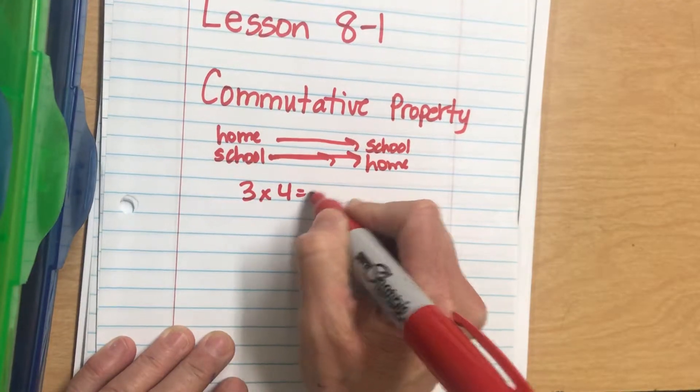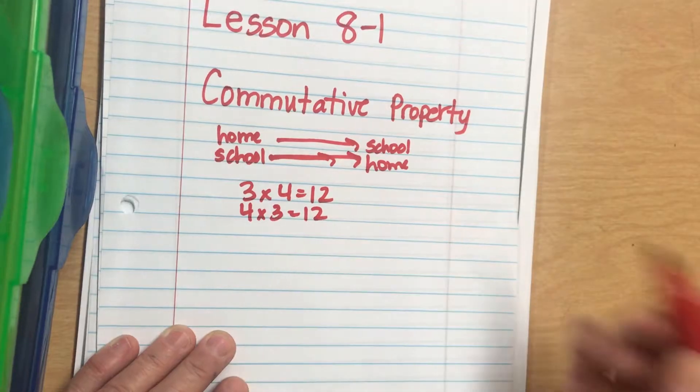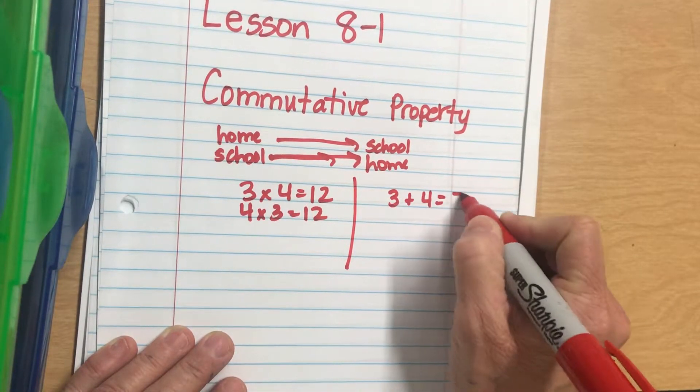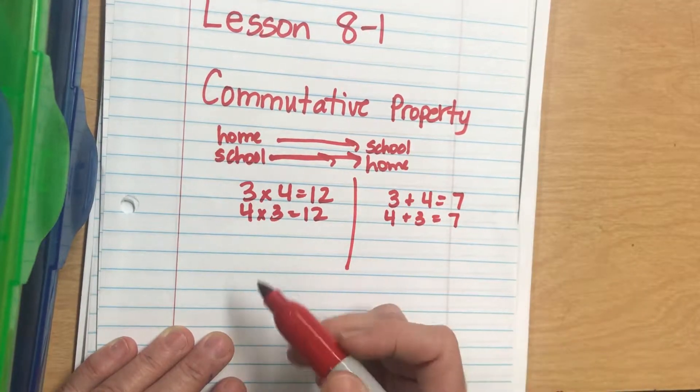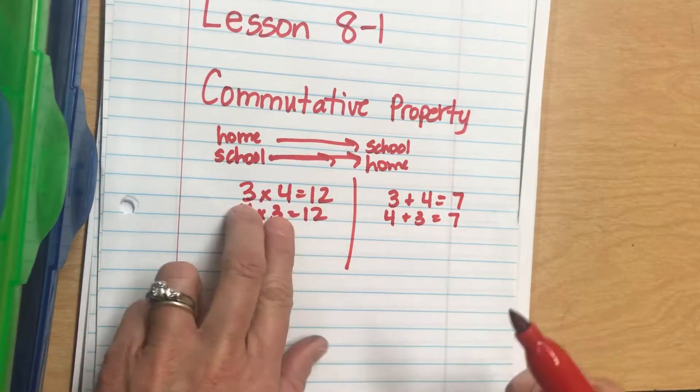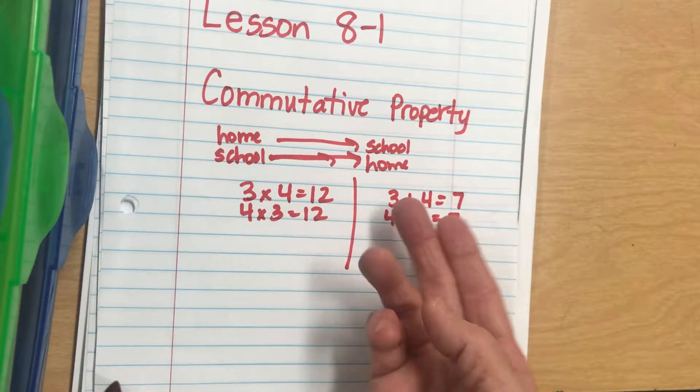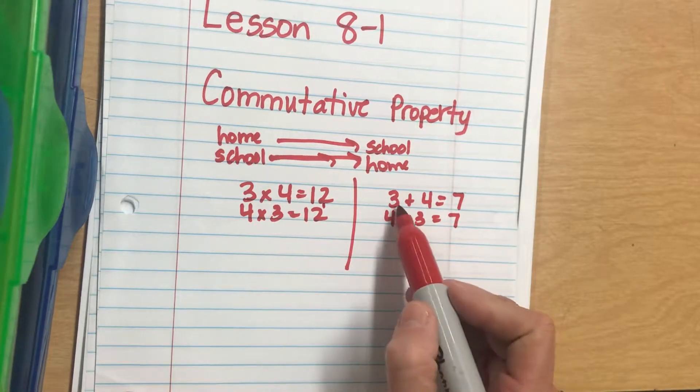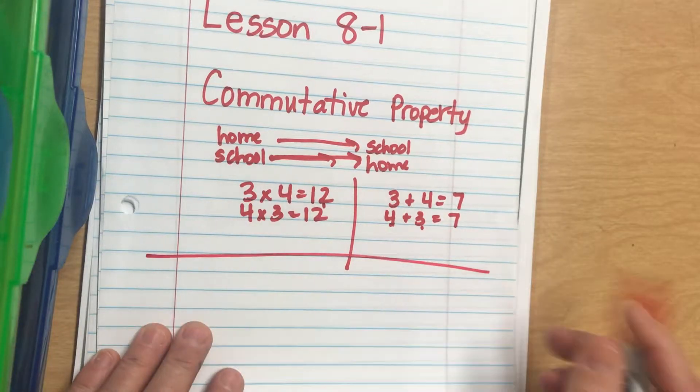In addition, it means 3 plus 4 equals 7 is the same as 4 plus 3 equals 7. So it still means the exact same thing. I can flip-flop - that's what commutative means - I can flip-flop my two numbers in multiplication and get the same answer, and I can flip-flop them in addition and also get the same answer.